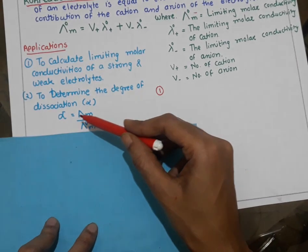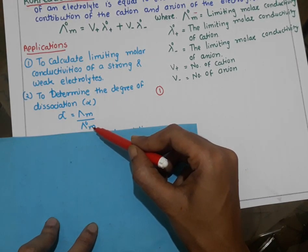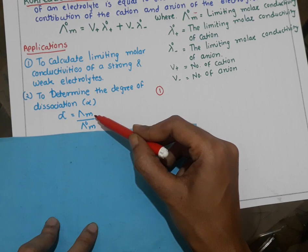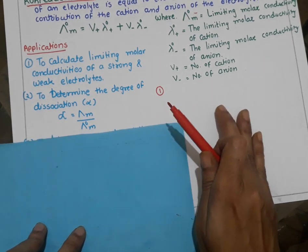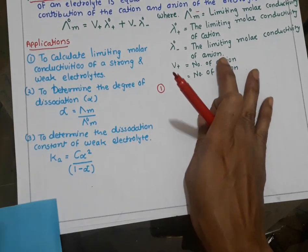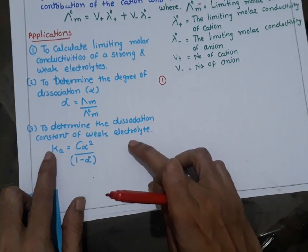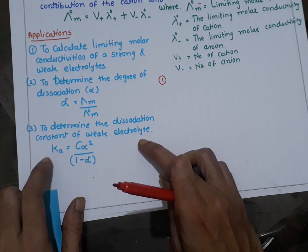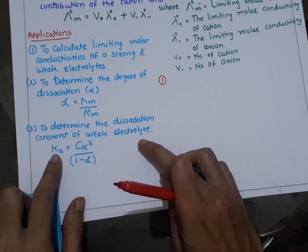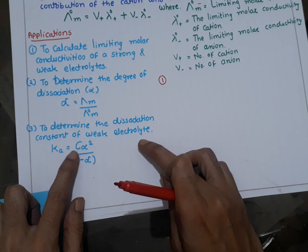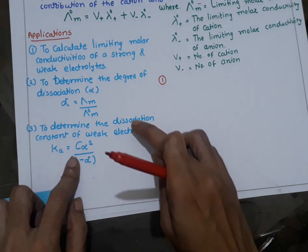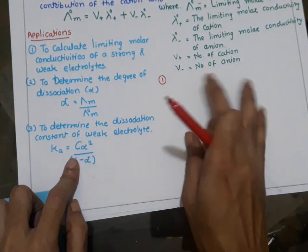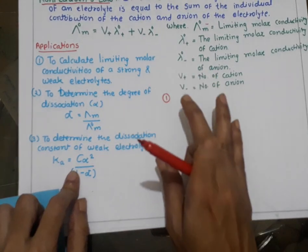The formula for the degree of dissociation is alpha equals lambda m divided by lambda naught m, where lambda m is the molar conductivity and lambda naught m is the limiting molar conductivity. It is also applicable to determine the dissociation constant of a weak electrolyte, where Ka equals C alpha squared divided by 1 minus alpha, and C is the concentration of the solution.